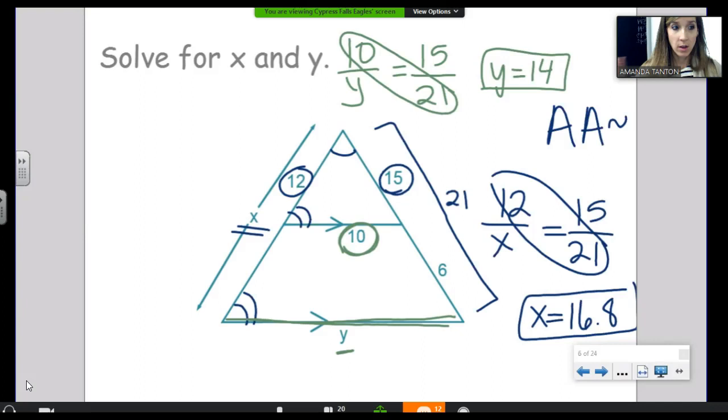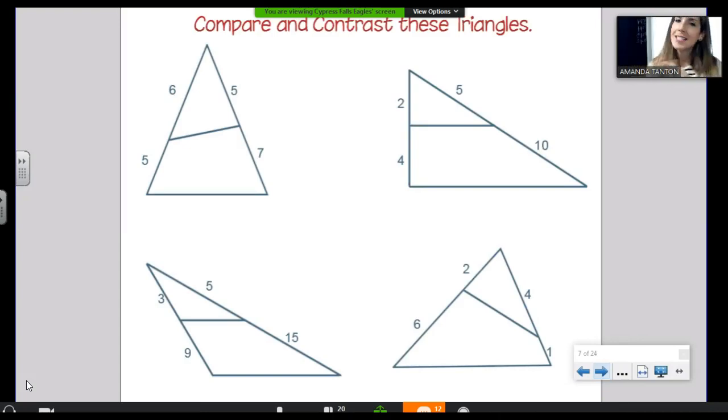Now I want you to look at these triangles. Look at the side lengths. Make connections. Compare and contrast the triangles. Some of these we can use the theorem on, and some of these we can't use the theorem on. So come to some conclusions. I'll give you 30 seconds.